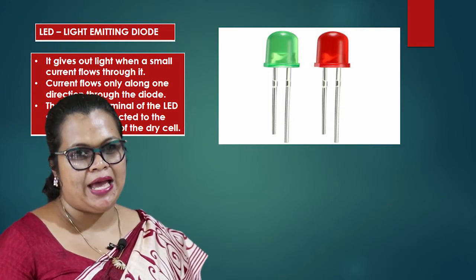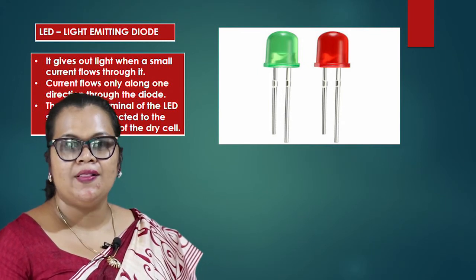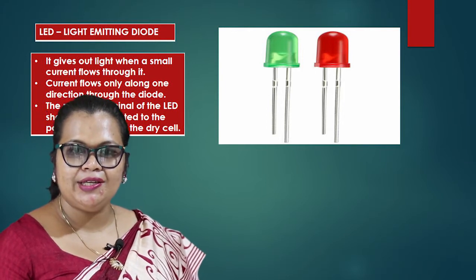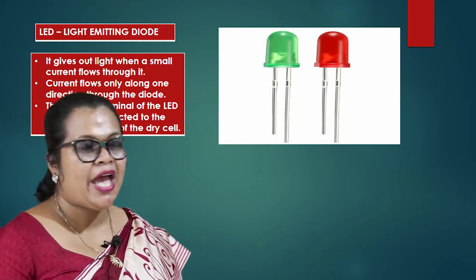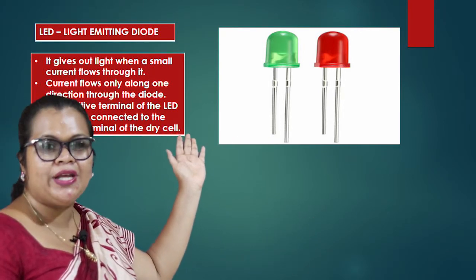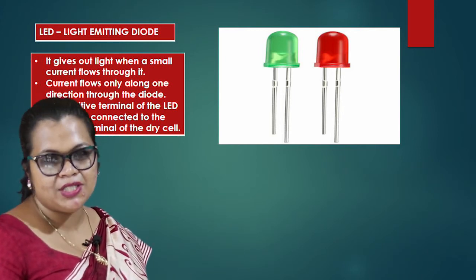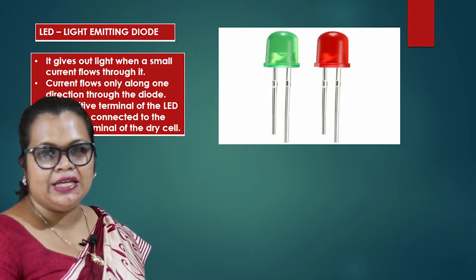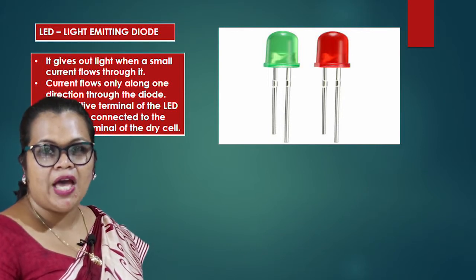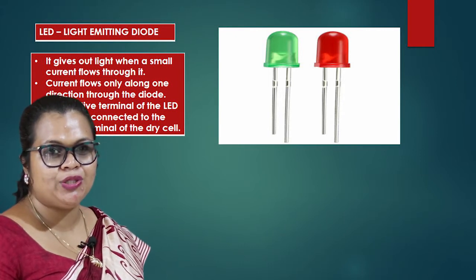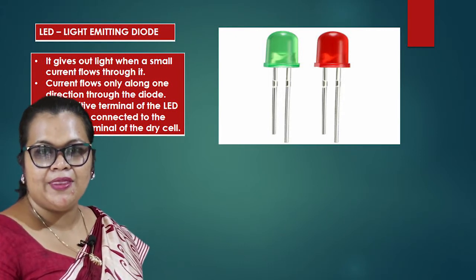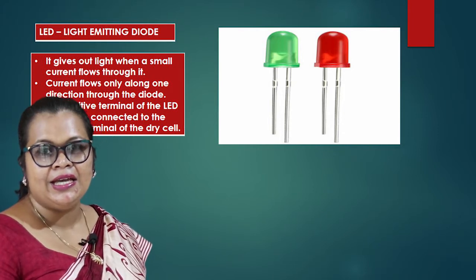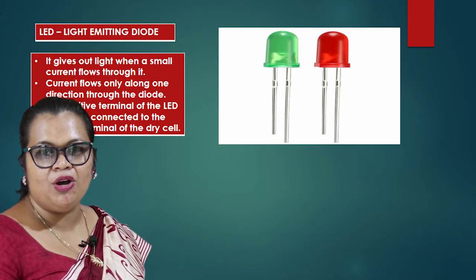The next electronic appliance we are going to learn about is the LED — light emitting diode. The speciality of the light emitting diode is that it gives out light when a small current passes through it. The light emitting diode has two terminals. The longer terminal is the positive terminal and the shorter terminal is the negative terminal. When connecting an LED to a circuit, we have to connect the positive terminal of the LED to the positive terminal of the external cell. Then only current passes through. So it is very clear that a diode allows current flow only along one direction.